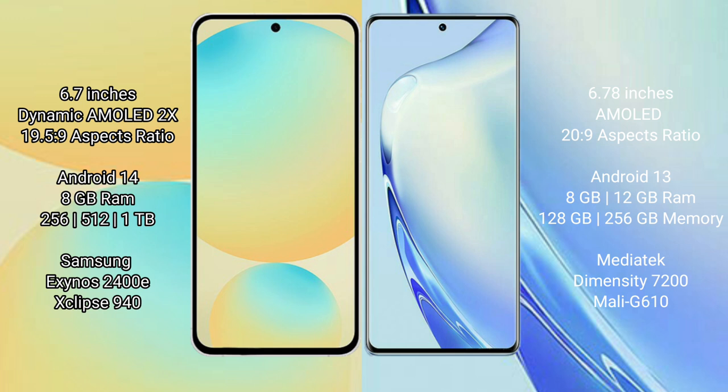Samsung Galaxy S24 FE runs on the Android 14 operating system. vivo V27 runs on the Android 13 operating system. Samsung Galaxy S24 FE comes with 8GB RAM and 256GB or 512GB internal storage options.